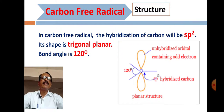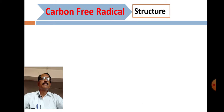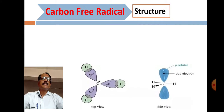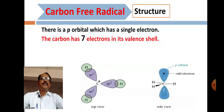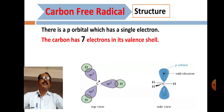This is the structure of carbon free radical. There is a P orbital which has a single electron. The carbon has seven electrons in its valence shell.